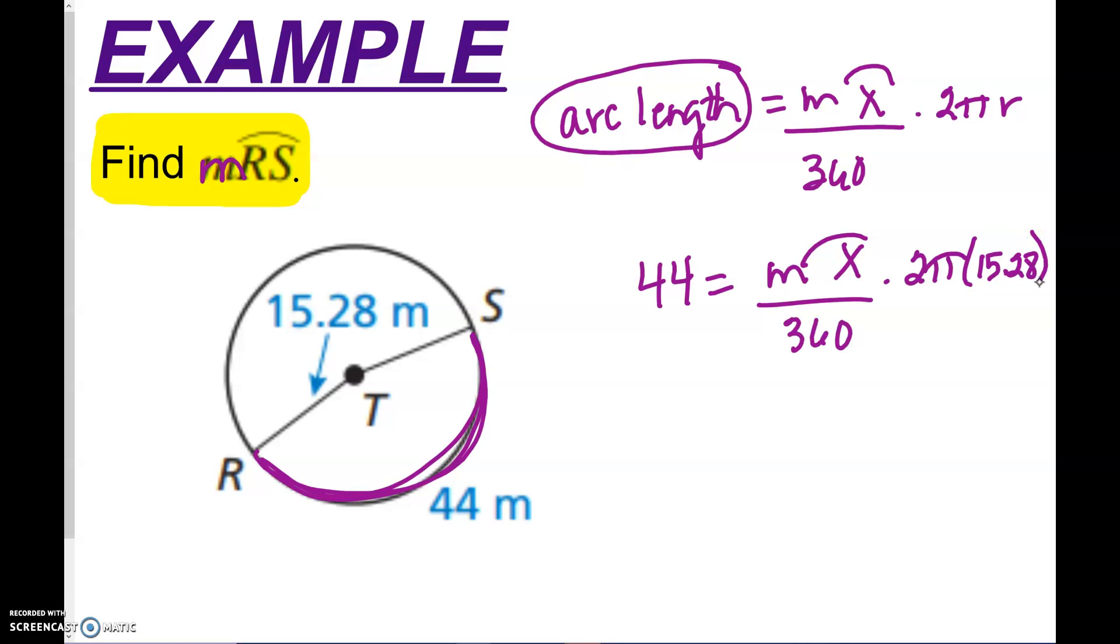times 2 times pi. And it looks like they're telling me that that radius is 15.28. So this basically is an algebra problem. So if we take and multiply both sides by 360 here, I can do 44 times 360. And over here, I'm going to get, what's that, 15,840 equals, and over here, I have x.